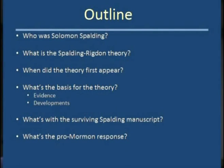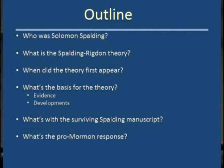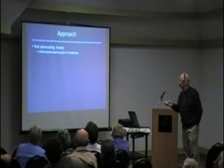Here's an outline: we're going to review who Solomon Spalding was, what the Spalding-Rigdon Theory is, when it first appeared — it's an old theory that's been around since the formation of Mormonism — what the basis and evidence for the theory is, what the recent developments are, and what we know about the surviving Spalding Manuscript. There is one Spalding Manuscript that is extant. We'll also talk about the pro-Mormon response to some degree.